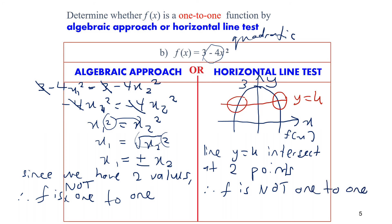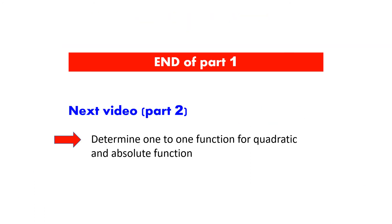Remember: if you have two intersections in the horizontal line test, or two values in the algebraic approach, the function is not one-to-one.